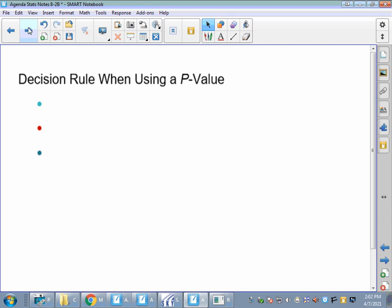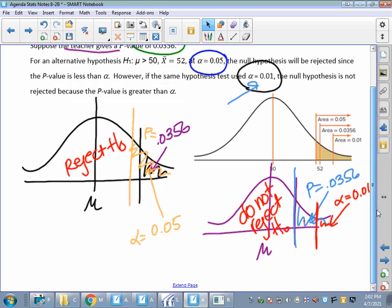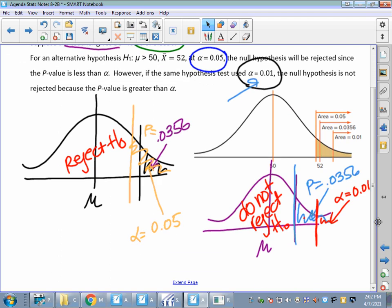Decision rule when using a p-value. If your p-value is less than alpha, reject the null hypothesis. That happened here, right? Our p-value was 0.0356, and our alpha was 0.05. My p-value was smaller than my alpha, so I'm going to reject my H sub O. If my p-value is larger than my alpha, that means I do not reject my H sub O.